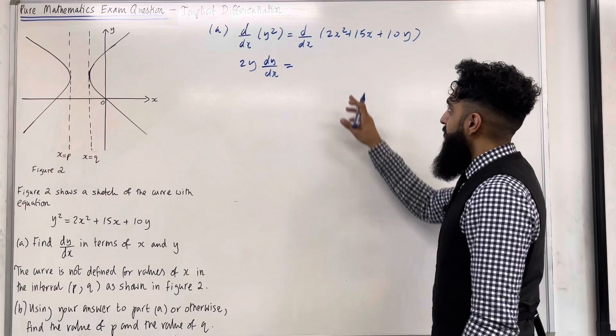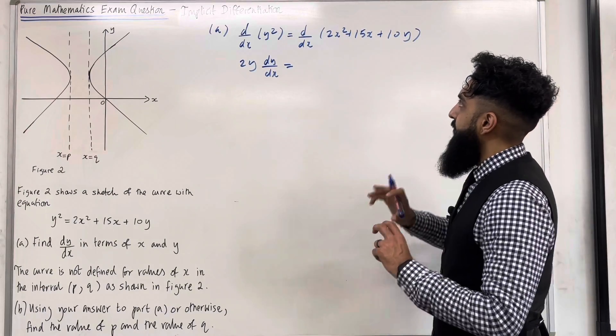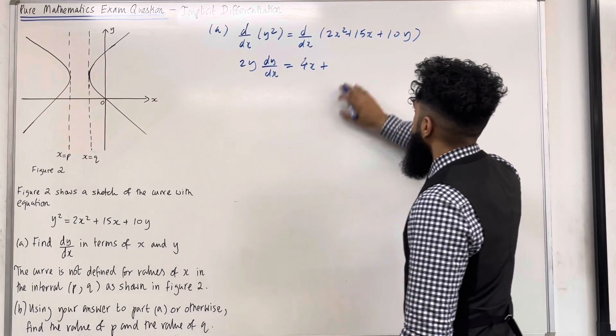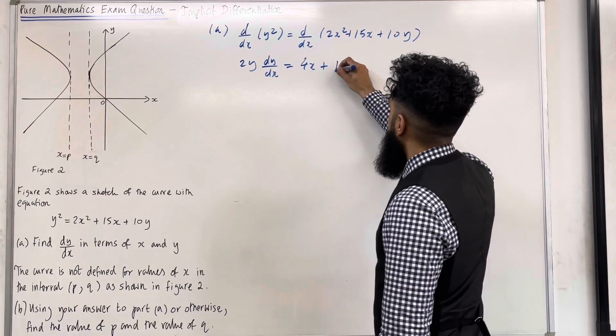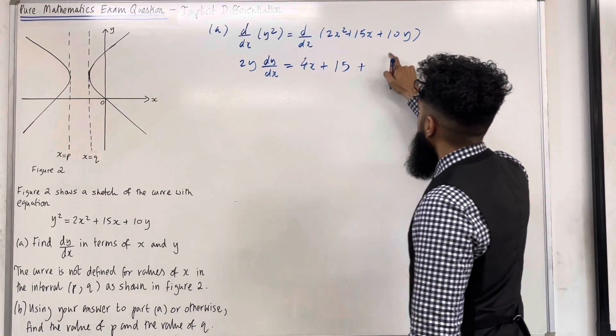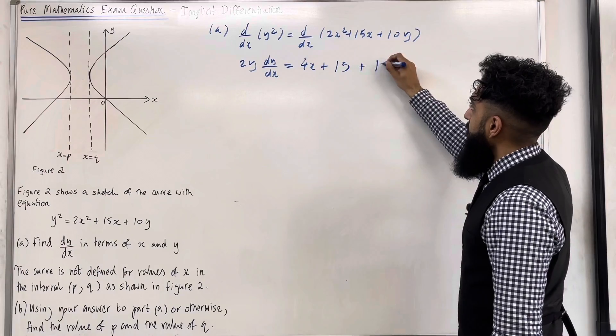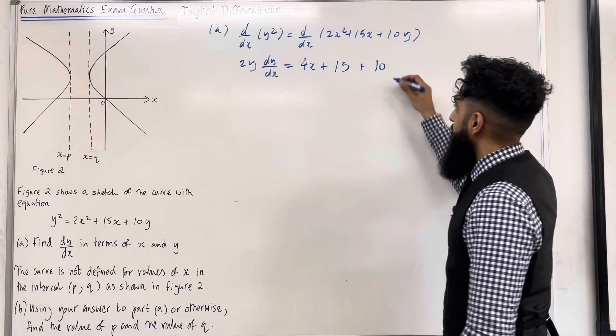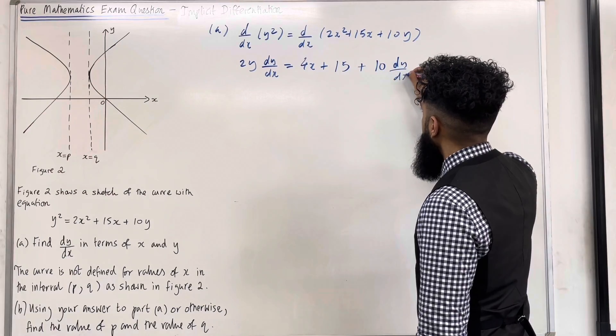Now I'm going to differentiate term by term over here with respect to x. 2x squared differentiates to 4x plus 15x differentiates to 15 plus 10y differentiates to 10. But because we're differentiating a y term with respect to x, we need to stick in dy over dx.